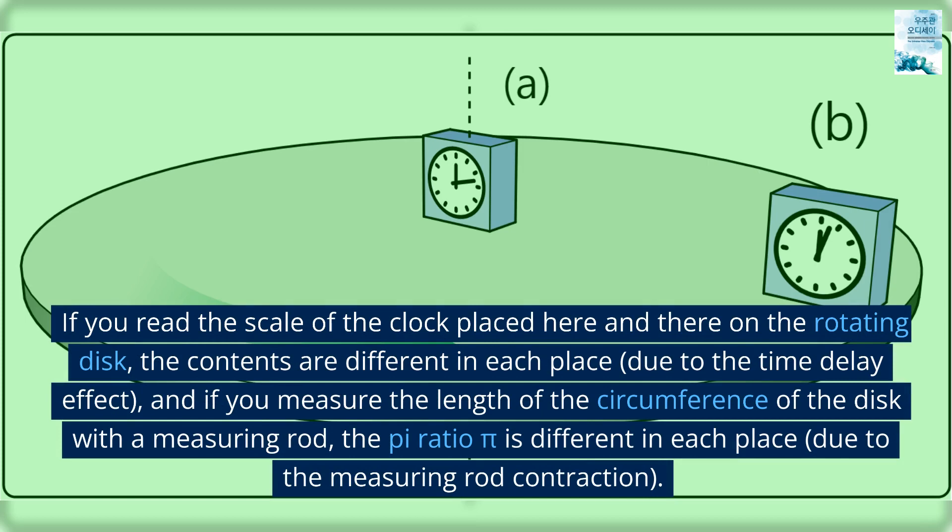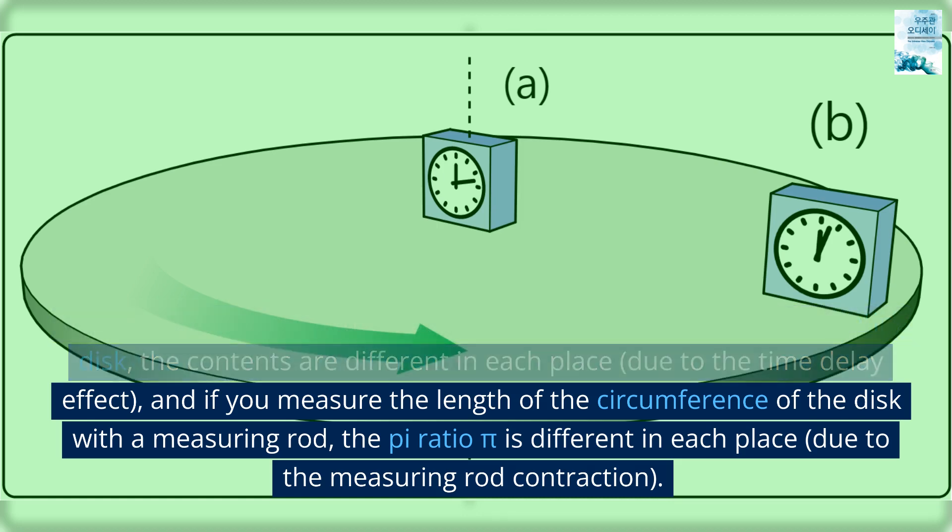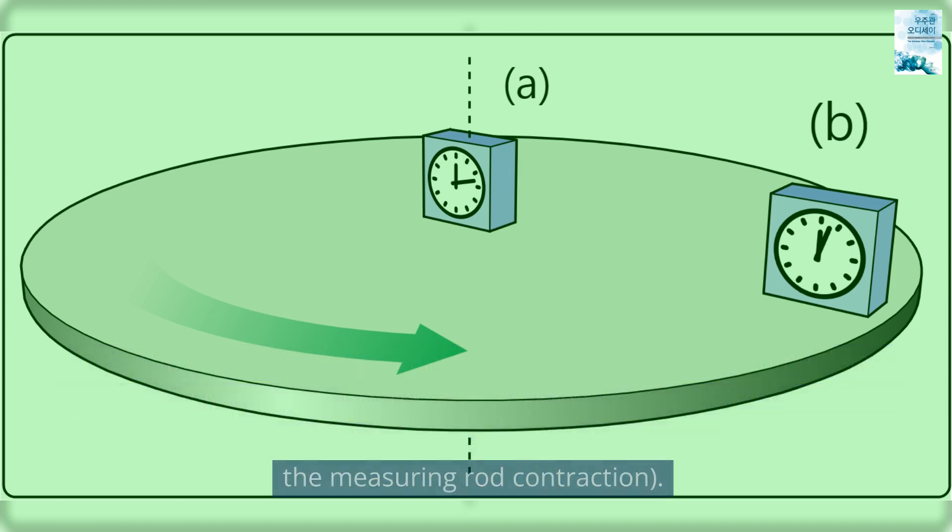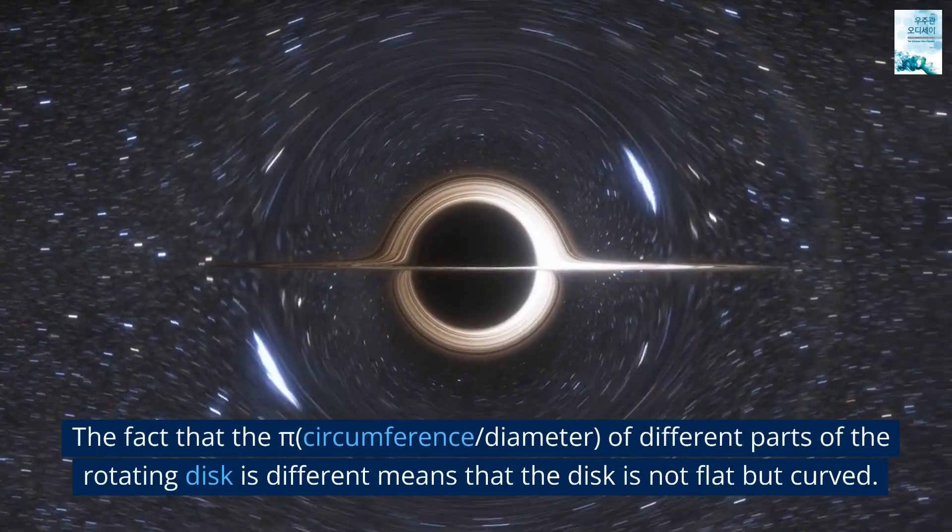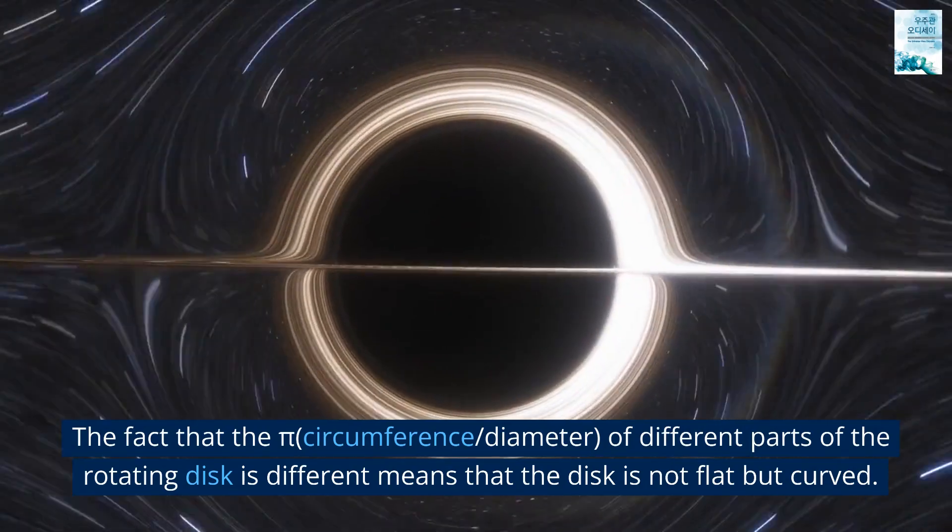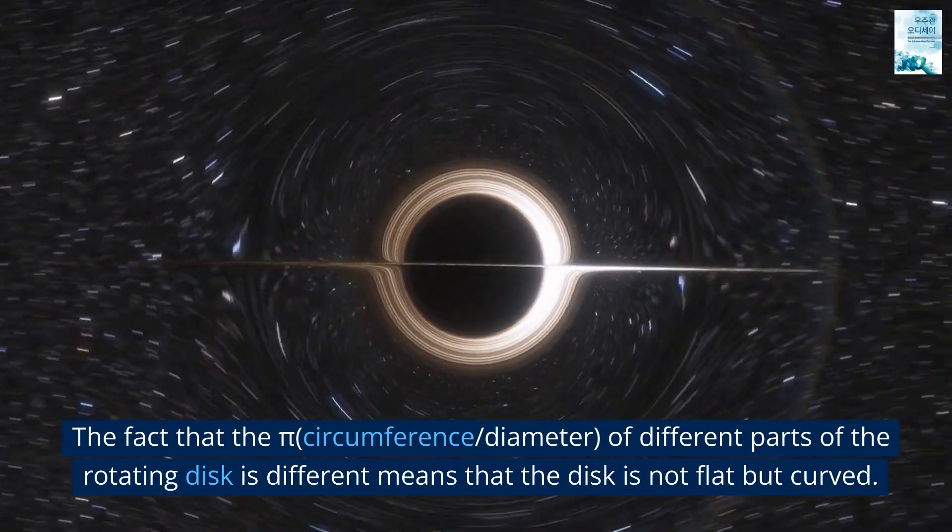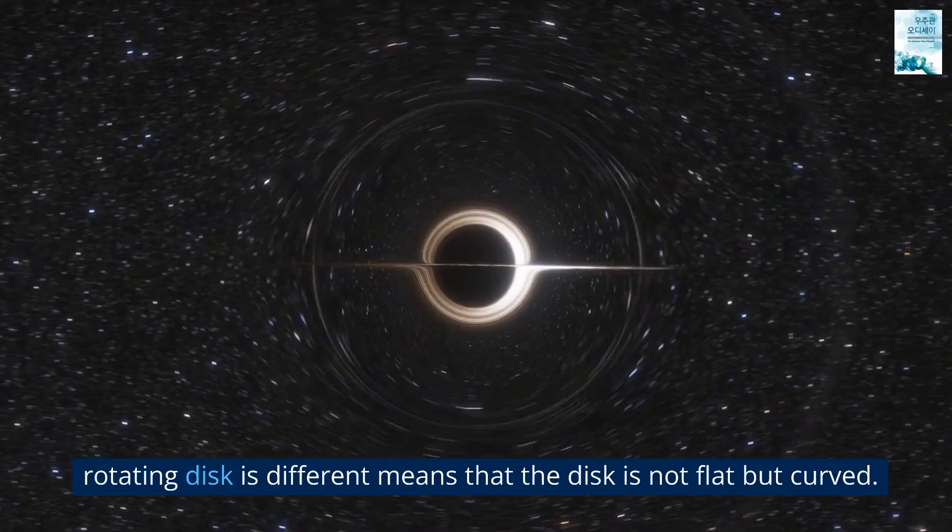If you read the scale of the clock placed here and there on the rotating disk, the contents are different in each place due to the time delay effect. And if you measure the length of the circumference of the disk with a measuring rod, the pi ratio is different in each place due to the measuring rod contraction. The fact that the pi, circumference over diameter, of different parts of the rotating disk is different means that the disk is not flat but curved.